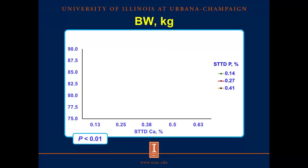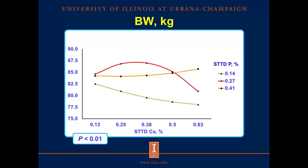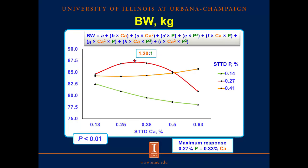For final body weight, a similar pattern to average daily gain was observed. If phosphorus is below the requirement, increasing calcium reduces body weight. If phosphorus is at the requirement, there is also a reduction as calcium is added. And if phosphorus is above the requirement, increasing calcium improves final body weight. The predicted maximum response was observed at 0.33% calcium when phosphorus was at the requirement, with a corresponding calcium to phosphorus ratio of 1.20 to 1. The full model was used for this variable.